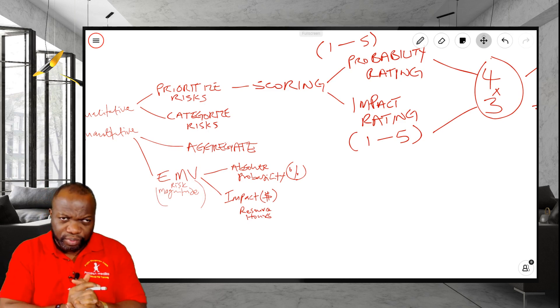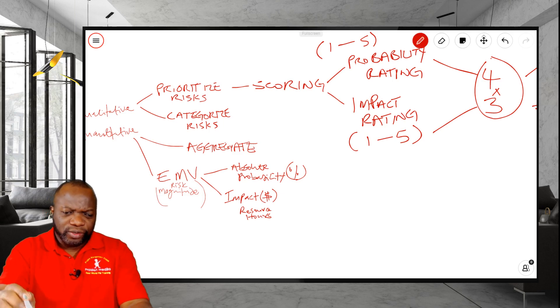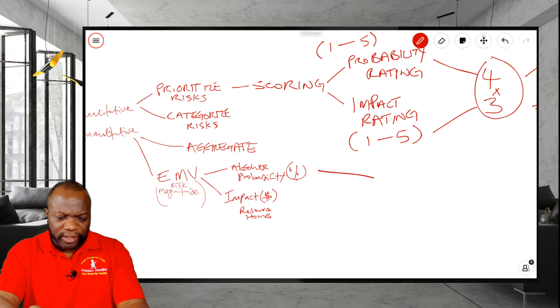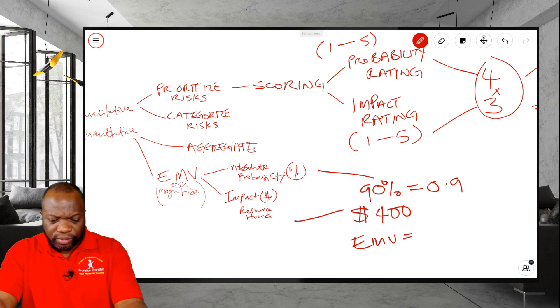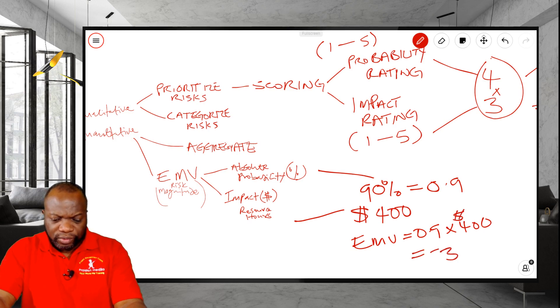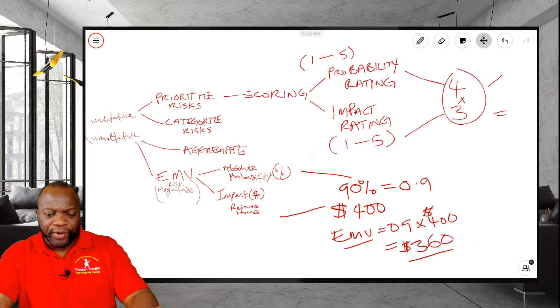So when you take a look at this, you're going to get your probability in percent, and let's say it's 90%. 90% is 0.9, right? The impact in dollars, let's say the impact in dollars is $400. Well, the EMV is going to be the product of both, probability times impact in dollars, and that will give you $360. And that will be your EMV, very different, as you can see, from a risk score.